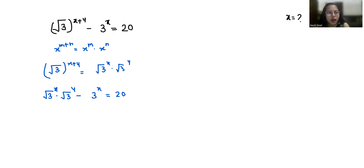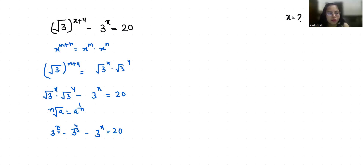According to the exponent rule, the nth root of a can be written as a power 1 by n. So root 3 power x becomes 3 power x by 2, giving us 3 power x by 2 times 3 power 4 by 2 minus 3 power x equals 20.